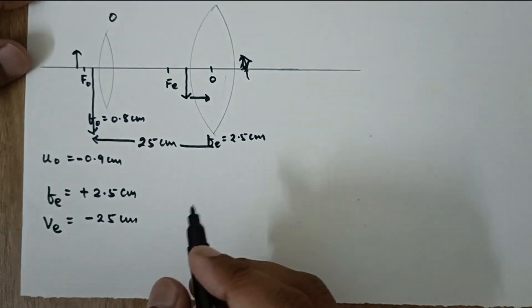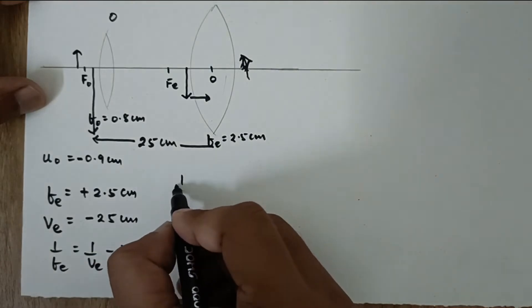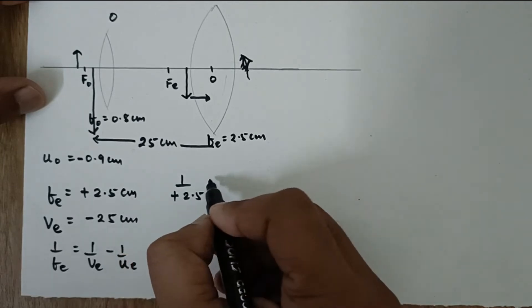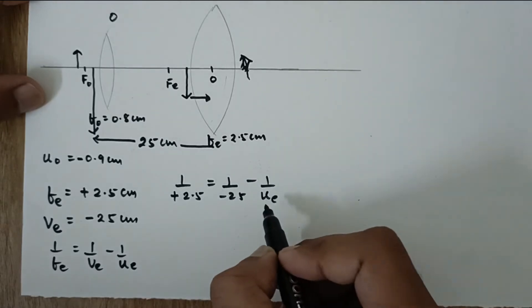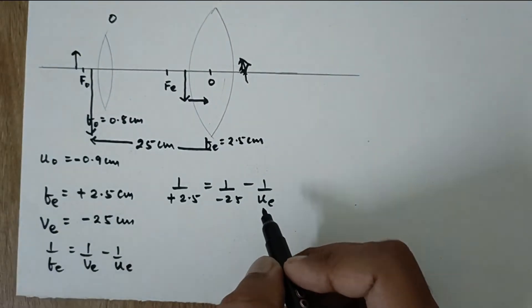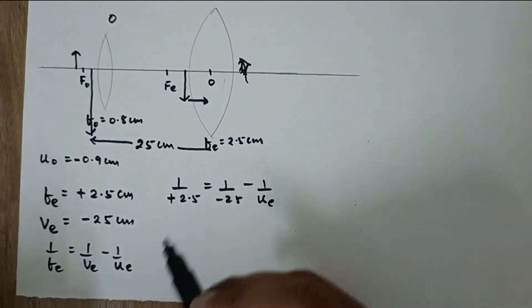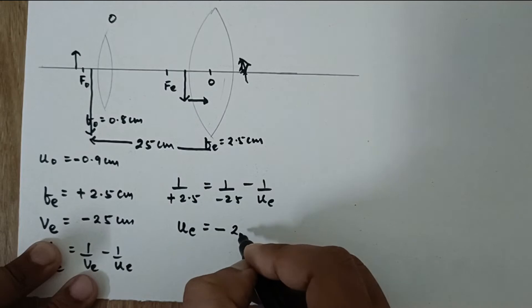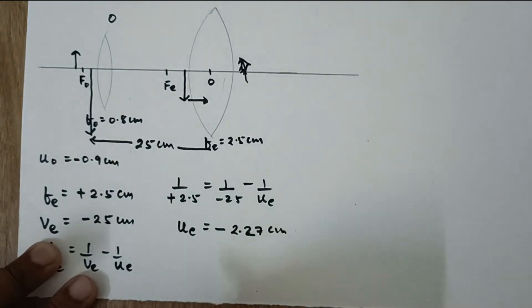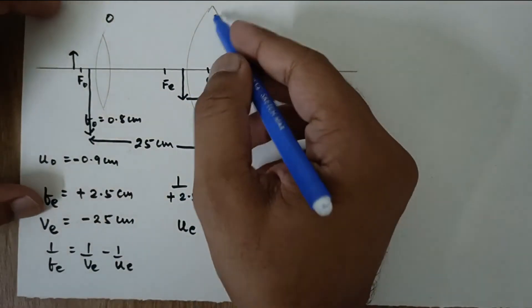Using the lens formula, placing the values. Please do not use sign convention here, this is to be found out. So if you will solve this just take this on that side and when you will solve this one you will get the value of UE to be minus 2.27 cm.